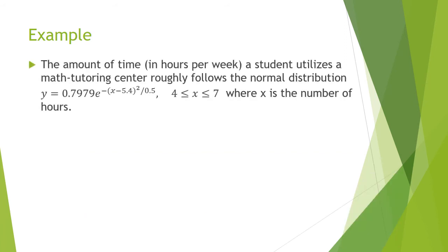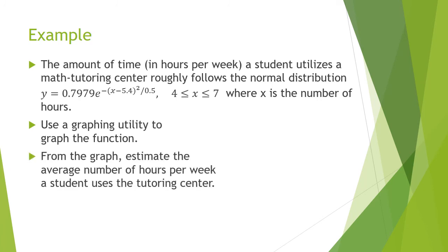The amount of time in hours per week a student utilizes a math tutoring center roughly follows the normal distribution, and they're giving us the equation where X is the number of hours. By the way, 4 is less than or equal to X is less than or equal to 7 means X is a number that is between 4 and 7. You're going to use your graph to graph it, and then estimate the average number of hours per week that the student uses the tutoring center. The average number of hours is going to be the peak of that graph. So pause the recording, give this a try, and resume to check your answer.